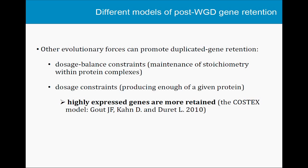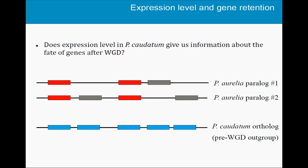With Laurent Duret and Daniel Kahn, we developed a model to try to explain how dosage constraints can explain the retention of genes in the paramecium genome. One of the predictions of this model was that highly expressed genes should be more retained — the selective pressure against pseudogenization of duplicated genes should be stronger for gene pairs with high expression levels compared to genes with low expression levels, on average. Spoiler alert: the answer is yes.